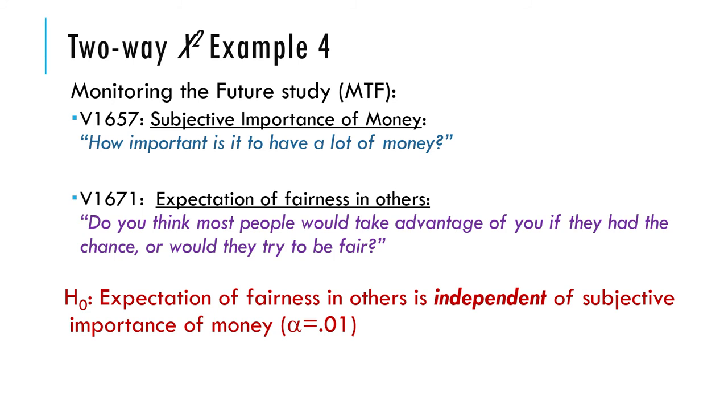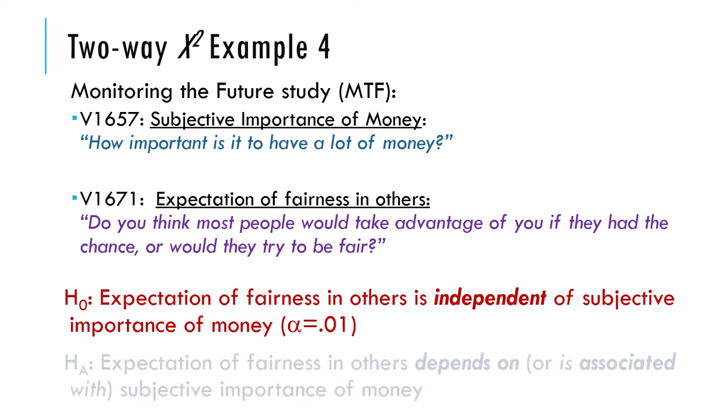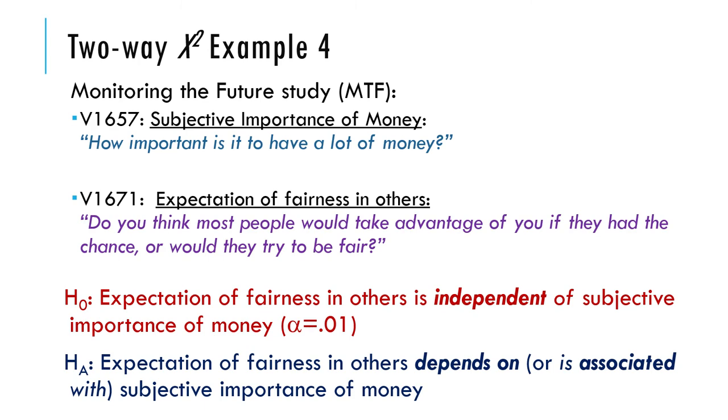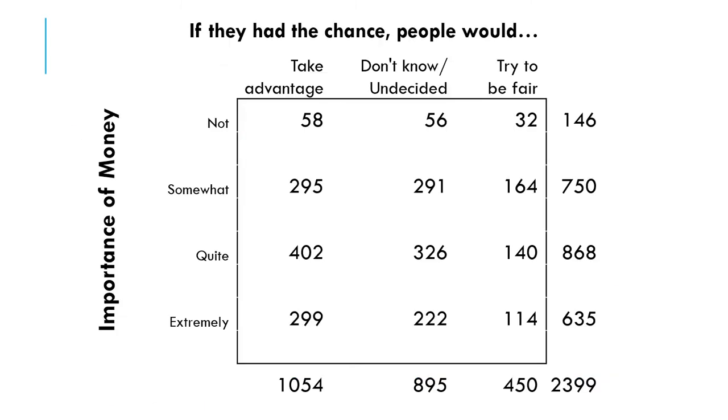The null hypothesis is that the expectation of fairness in others is independent of the subjective importance of money. This is a chi-square because these were not measured numerically. They were measured on sort of Likert scale type things, they're categorical. The alternative hypothesis is that the expectation of fairness does depend on, or is associated with, the subjective importance of money. Here's the data. I made a contingency table out of the data. If they had the chance, people would take advantage of you, I don't know, or try to be fair. Those are three categories.